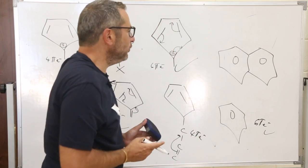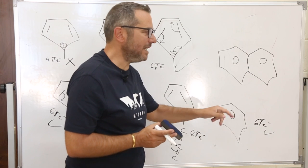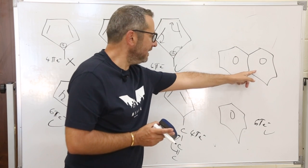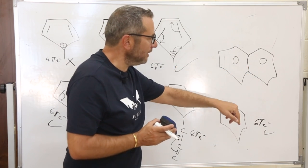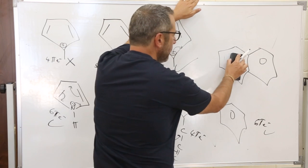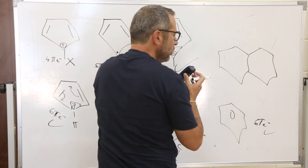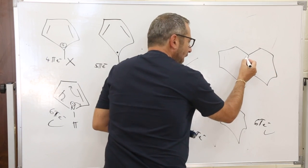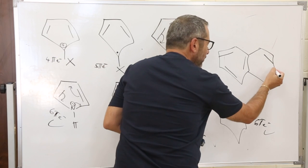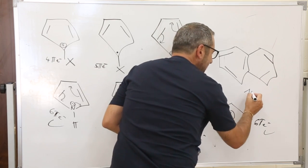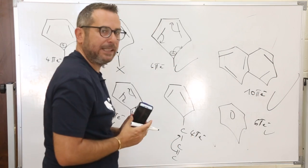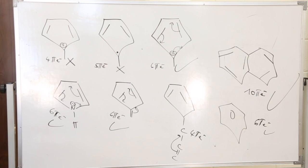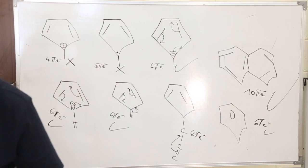For a compound with double bonds that cannot reach the cycle, I cannot count them — giving only 4 pi electrons inside, so not aromatic. For naphthalene, you might say 12, but there is a double bond in common between the two rings, so it is actually 10 pi electrons — aromatic. So these are some examples of aromatic compounds.